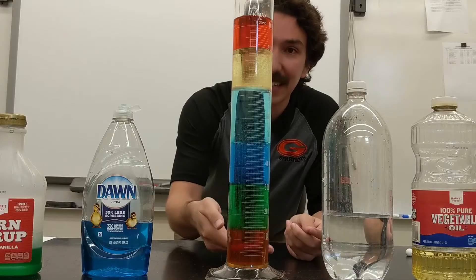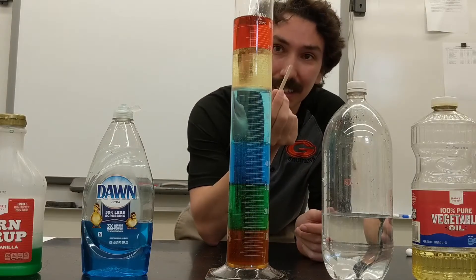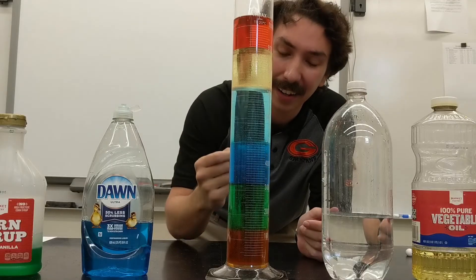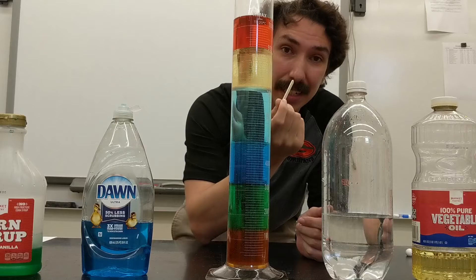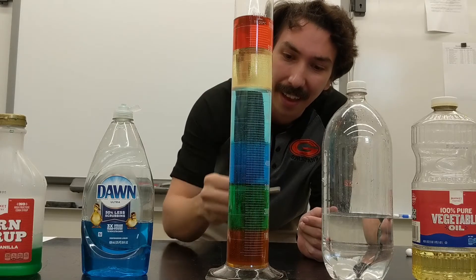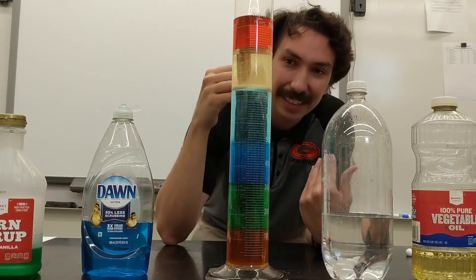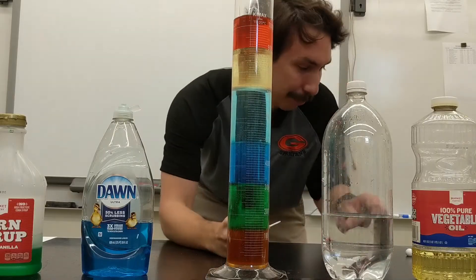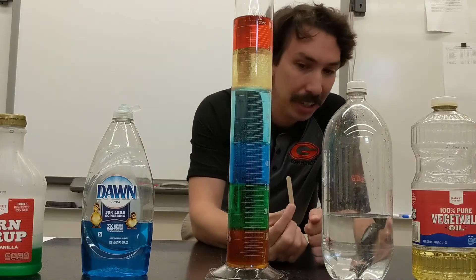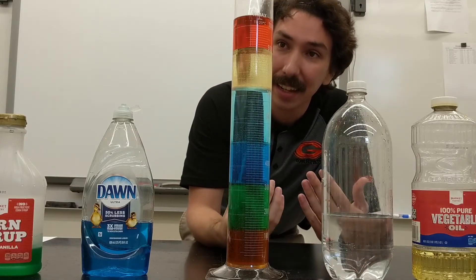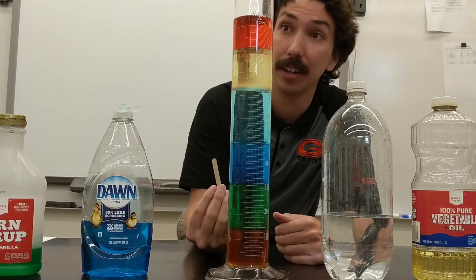So now that we've made our density column, it's time to test other items to see where their density falls. So if it falls below something, that means it's more dense than that substance. And if it is floating on top of something, it is going to be less dense. So we're going to start off. This is just a popsicle stick. What I want you guys to do is just think about where you think each one's going to fall. Just try to play the guessing game and we'll see where it ends up falling.